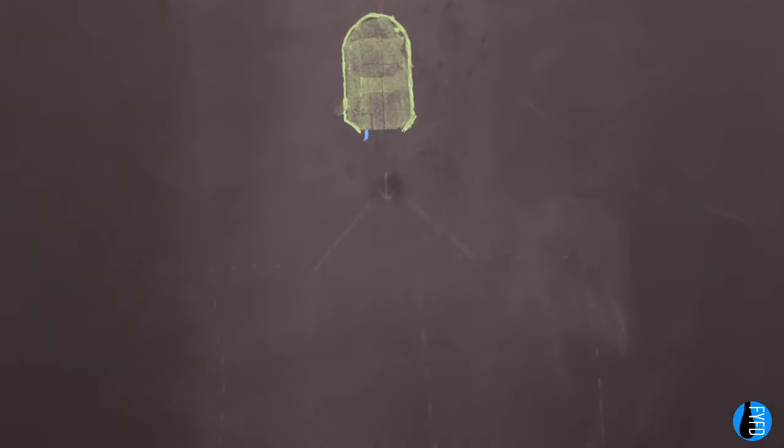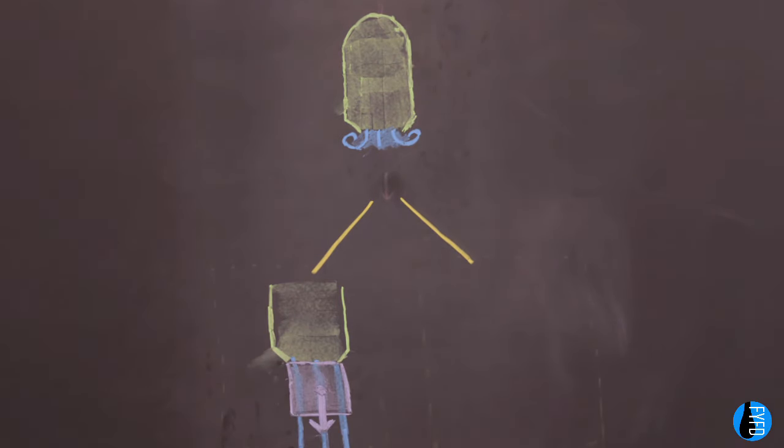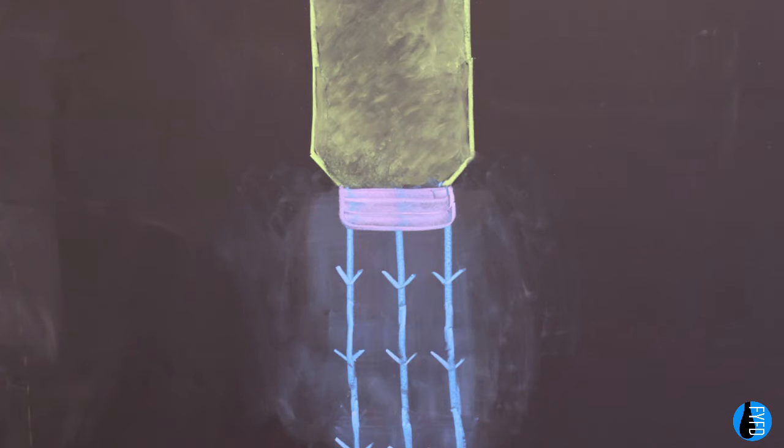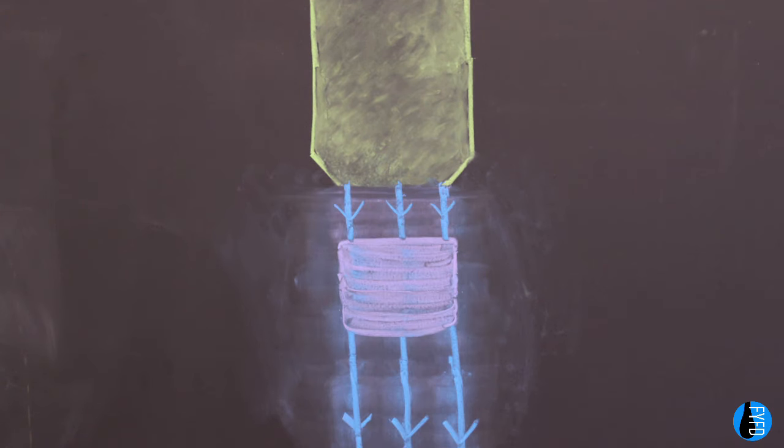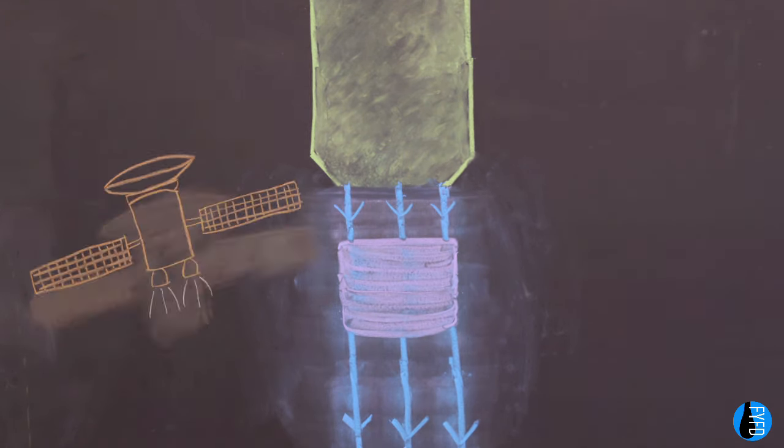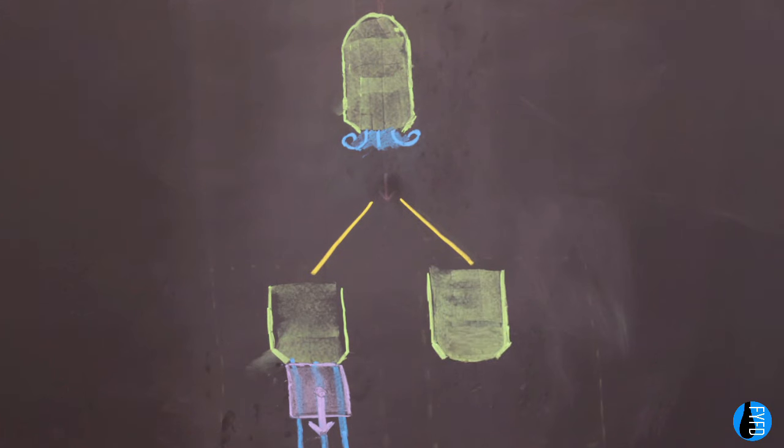So when fluid is ejected from the thruster, two effects combine to produce the thrust that moves the vehicle. First, the mass transferred out of the jet provides a force that is similar to the force produced by a satellite's thruster. Second, there's an extra pressure at the nozzle that comes from creating the vortex ring.